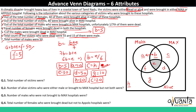First question: total number of victims. The total is the sum of all regions A plus B plus C plus D plus E plus F plus G plus H, which equals 150. So 150 is the correct answer.